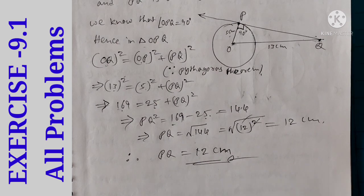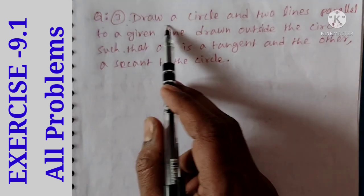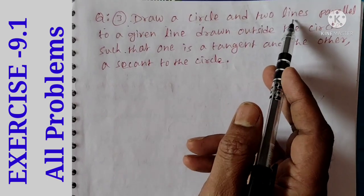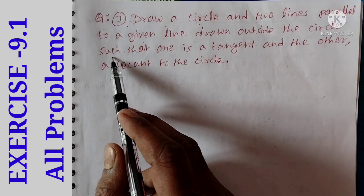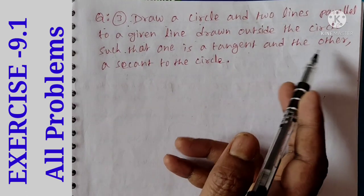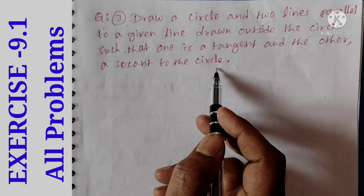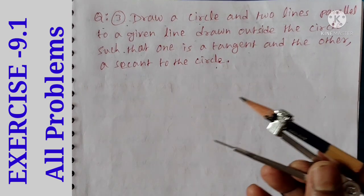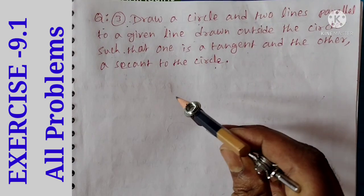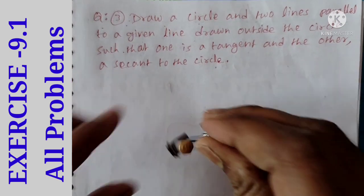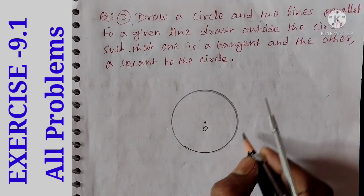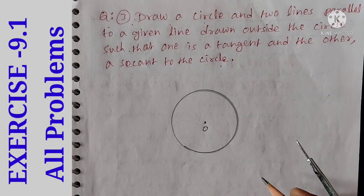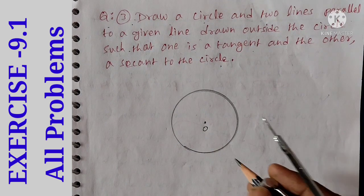This is the answer — a simple and very important question. Question number 3: draw a circle and two lines parallel to the given line drawn outside the circle such that one is the tangent and the other is the secant to the circle. Draw a circle with any radius.